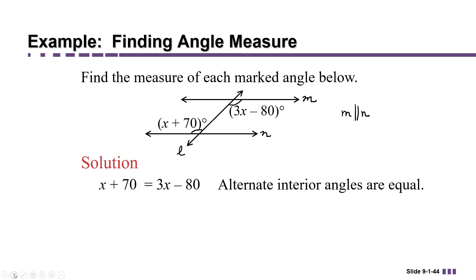We know that the angle x plus 70 has to be equal to 3x minus 80. Solving for x, we're going to subtract x from both sides and add 80 to both sides. On the right, that's going to give us 2x and on the left we'll get 150. So now we have 2x equals 150. We can divide both sides by 2 to get x by itself. This means that x is equal to 75.